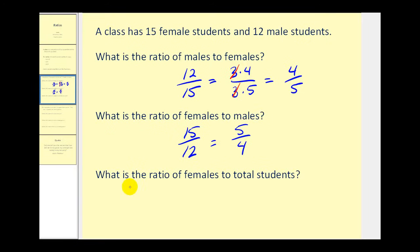And then lastly if we want the ratio of females to the total number of students, well there are 15 female students. The total number of students would be 15 plus 12 or 27. So the ratio would be 15 to 27. And again this can be simplified. 15 would be 3 times 5, 27 is 3 times 9. So they have a common factor of 3. So the ratio of female students to total students would be 5 to 9.